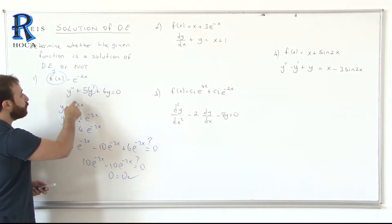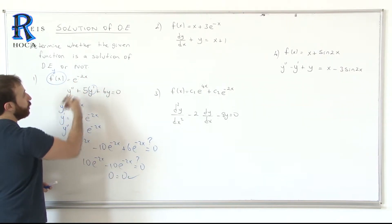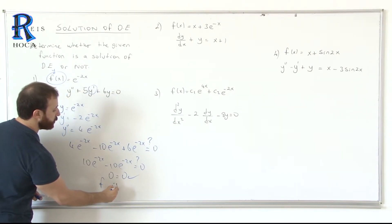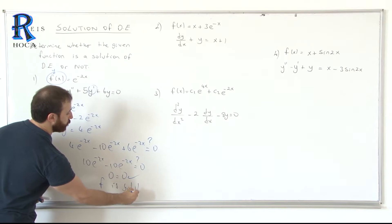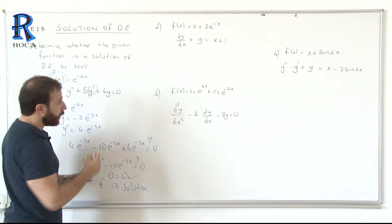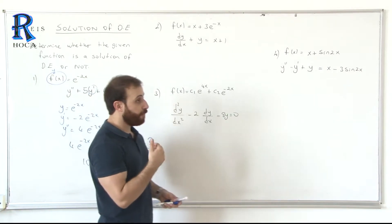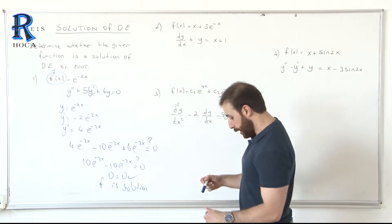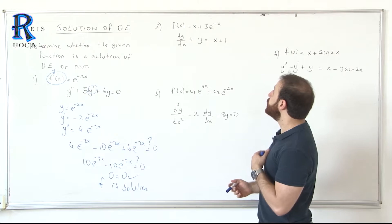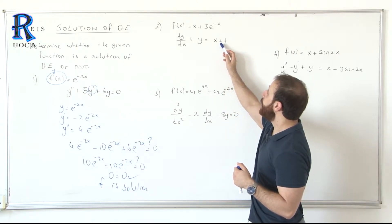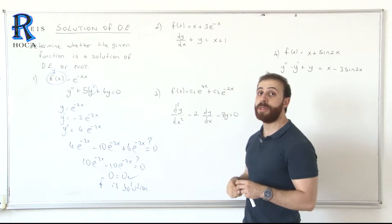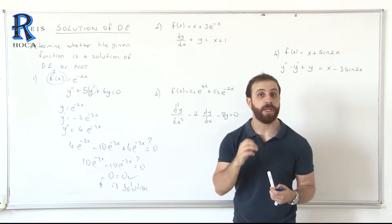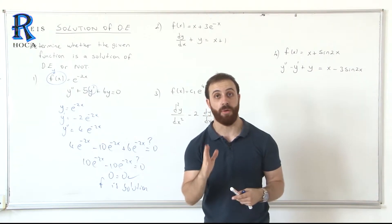So the left side equals the right side — this function satisfies the differential equation, so this is a solution. For the second question, we have a function and we will check if the right side equals x plus 1. The right side here is x plus 1, so don't always equalize to 0.